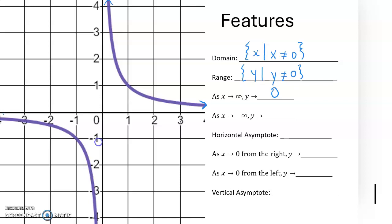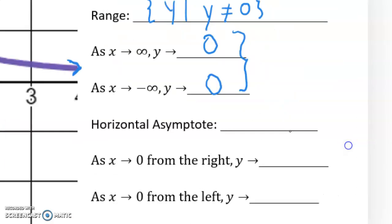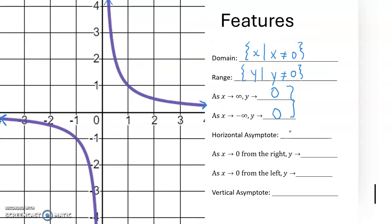Same thing in the negative direction: towards the left, the graph is also flattening out and getting closer and closer to 0, approaching from the negative direction. Because these two limit values are both 0, this graph has a horizontal asymptote at y equals 0.